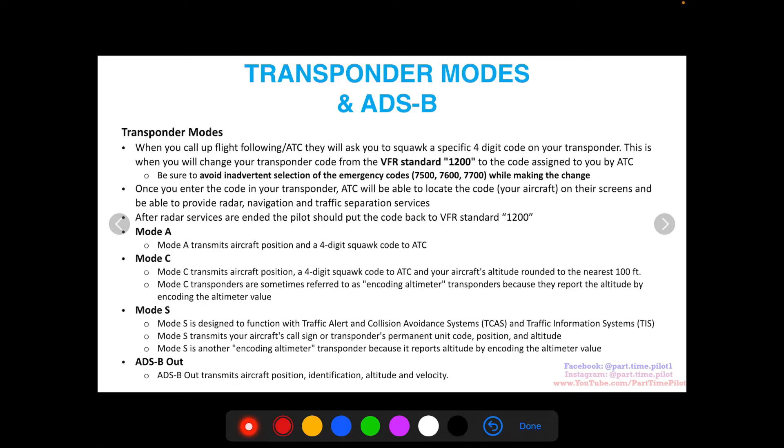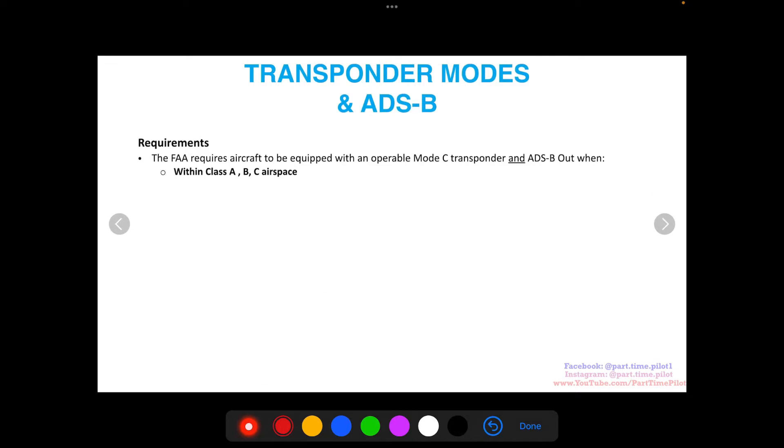ADS-B is separate but sometimes combined into the same unit on your aircraft. Essentially ADS-B transmits a lot more information including aircraft position, identification, altitude, and velocity in three dimensions so ATC can know exactly how fast you're descending or climbing, which direction you're traveling, and at which speed.